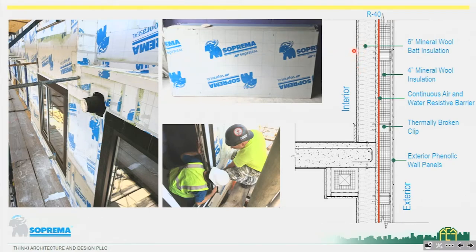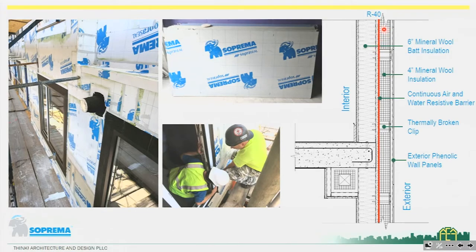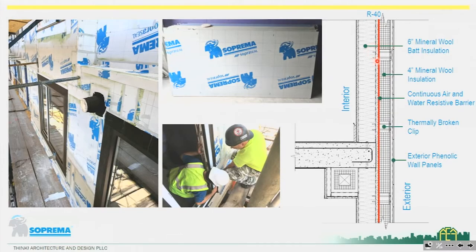The front wall assembly consists of interior drywall, six-inch mineral wool batt insulation from Roxul between the studs, then the Suprema board providing the air tightness layer, and then four inches of mineral wool insulation outboard of that. The design was updated to eliminate a thermally broken clip — the four-inch mineral wool has sufficient density that it's self-supporting and can support the weight of the panels. This actually improves wall performance by removing those clips at certain intervals on center. Outboard of the insulation is a hat channel, and then the steel panels attach to that.